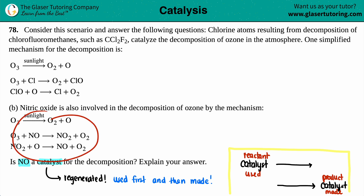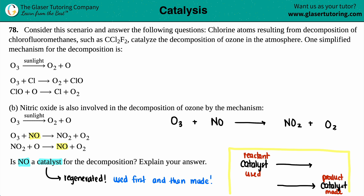Now I just have to look and see where NO appears. I can see two reactions that have NO — one here and one here. I can't count NO2 because that's a different compound. So I don't care about the first step. I'm going to focus on the second and third steps. The second step says: O3 plus NO yields NO2 plus O2.